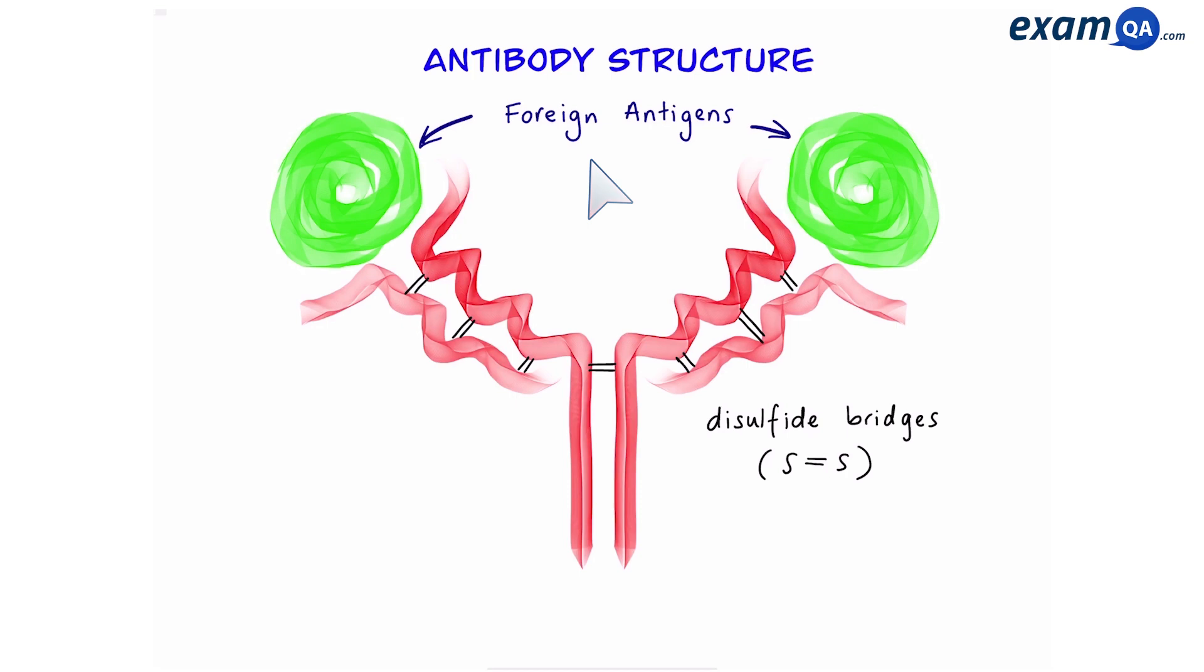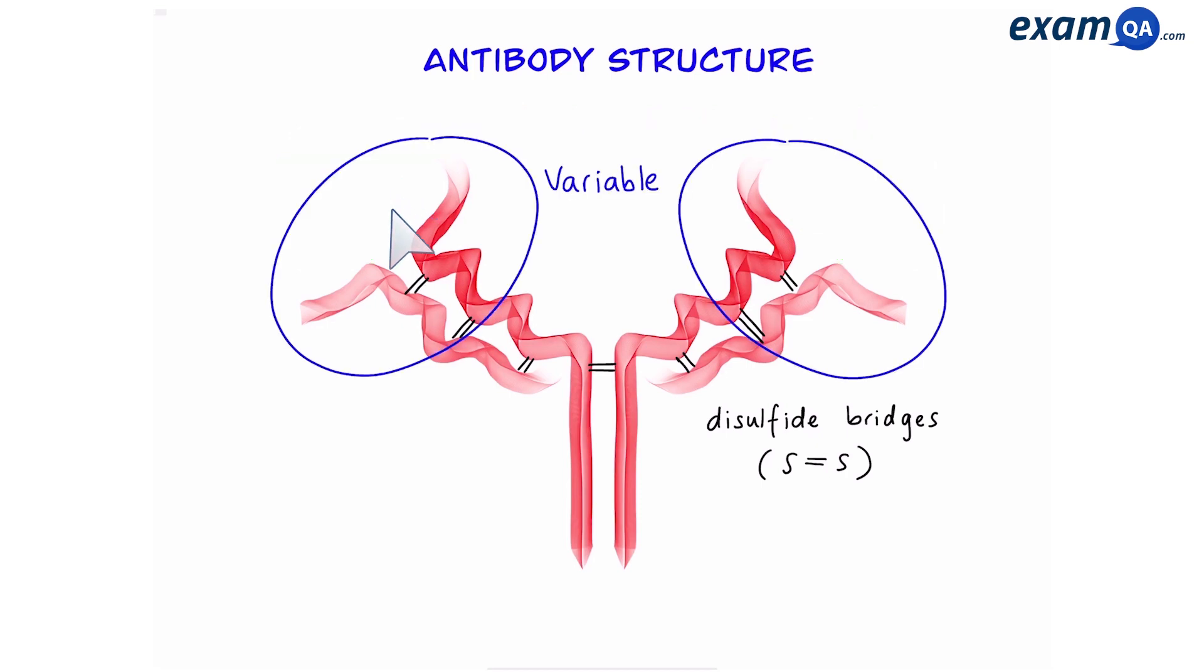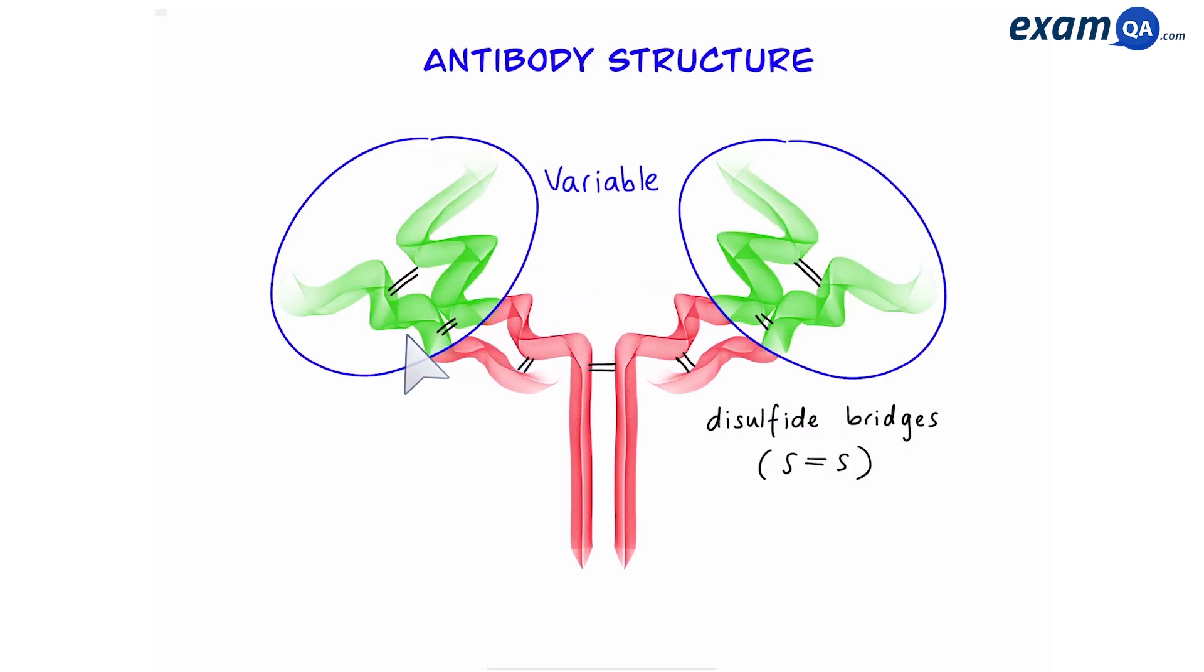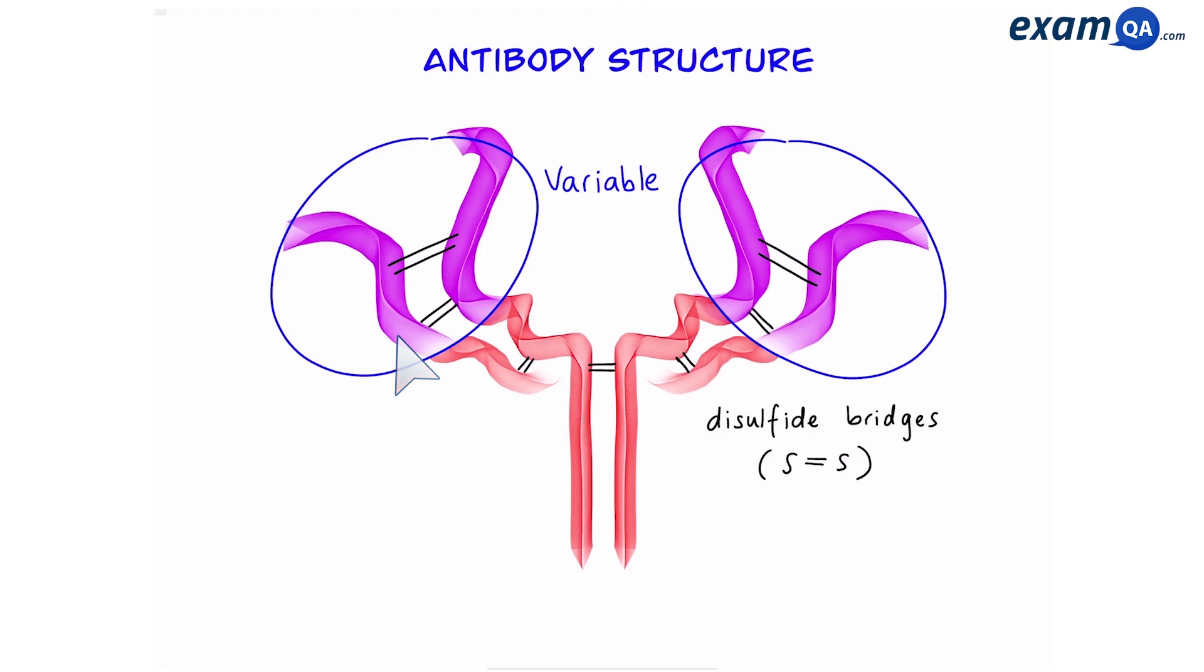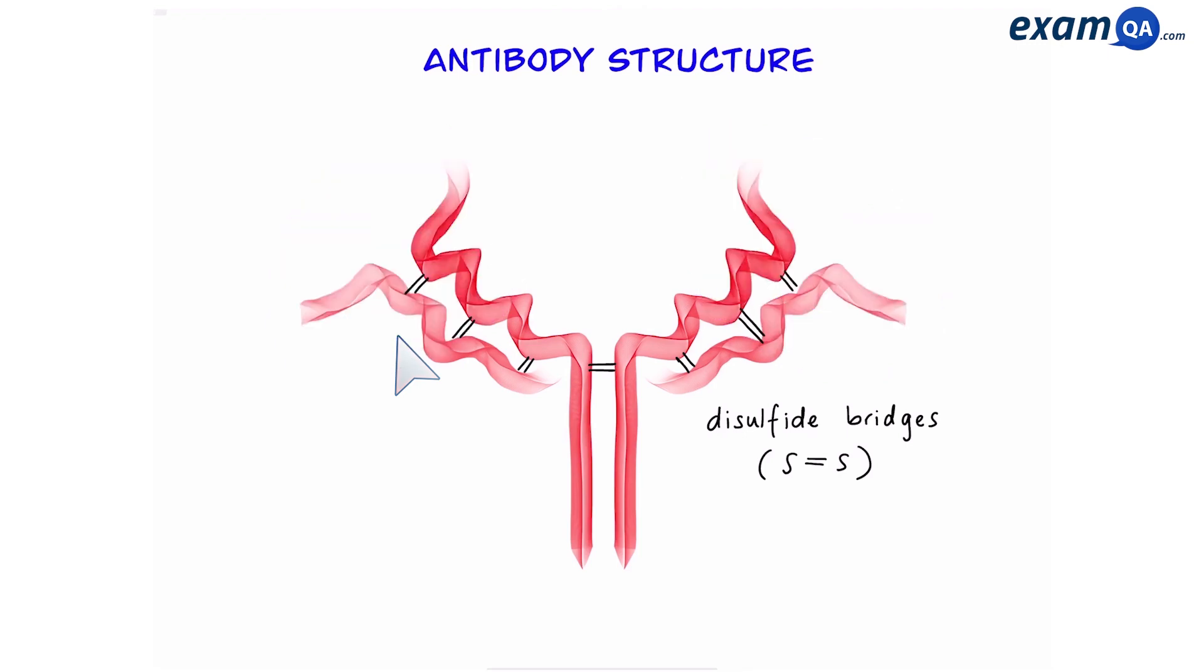However, we know that antigens have different shapes. So let's see how the antibody responds to that. These areas are called the variable regions. That means they can be made of different sequences of amino acids. This gives us unique shapes of different antibodies to suit all the different types of antigens.